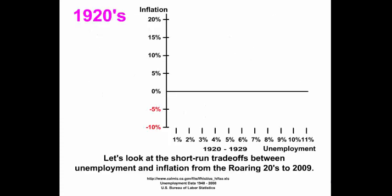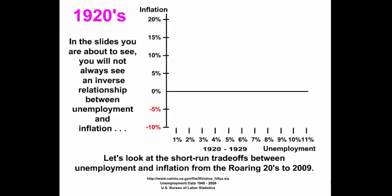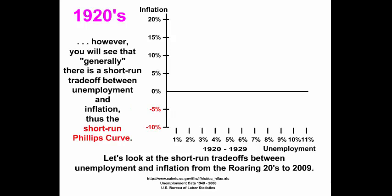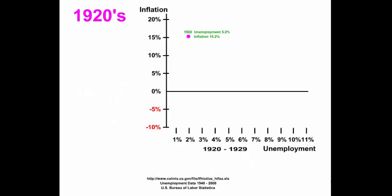Let's look at the short-run trade-off between unemployment and inflation from the Roaring Twenties to 2009. We're going to plot inflation and unemployment on this graph. In the slides you'll see, you will not always see an inverse relationship between unemployment and inflation. However, you will see that generally there is a short-run trade-off between unemployment and inflation — the short-run Phillips Curve. Let's go ahead and plot the dots for the 1920s.